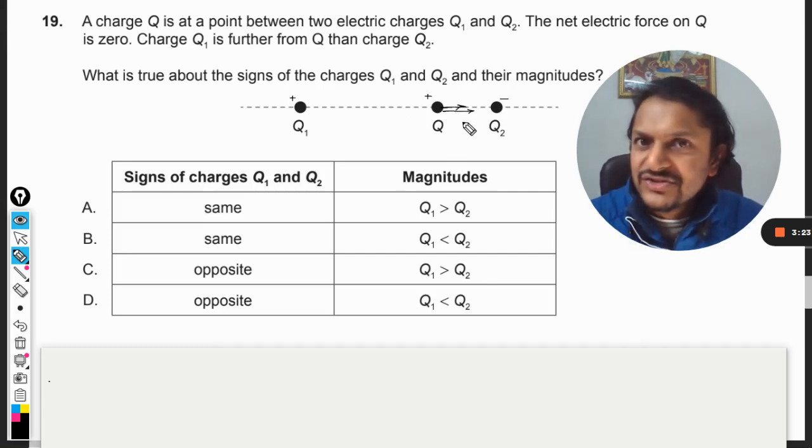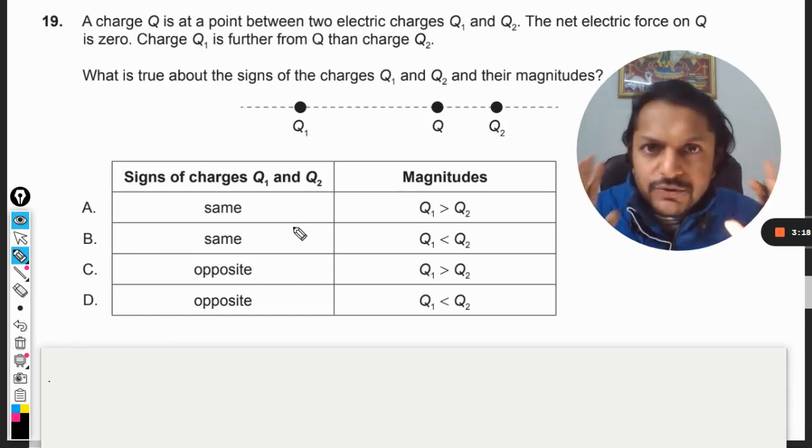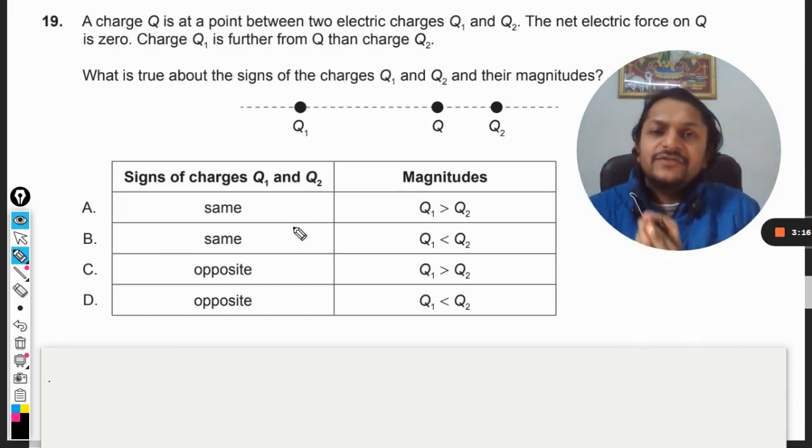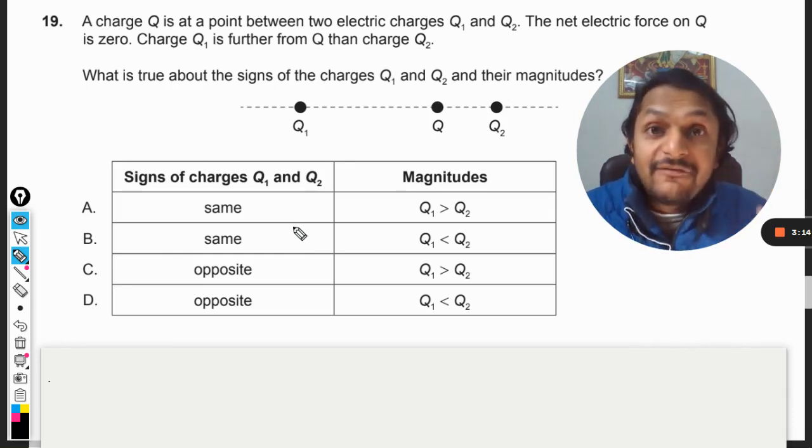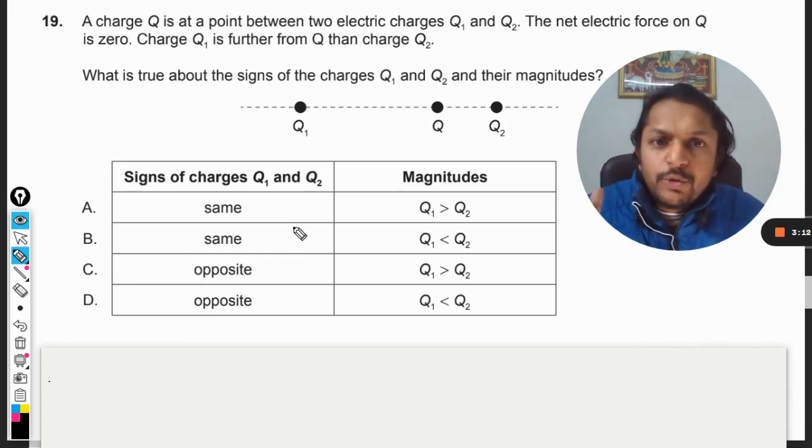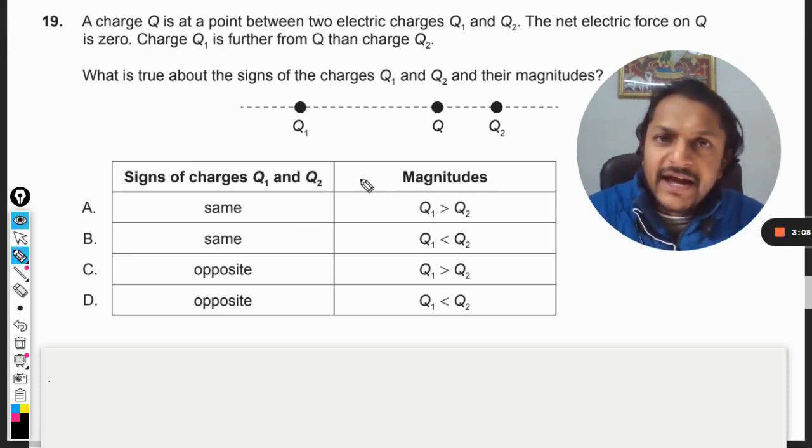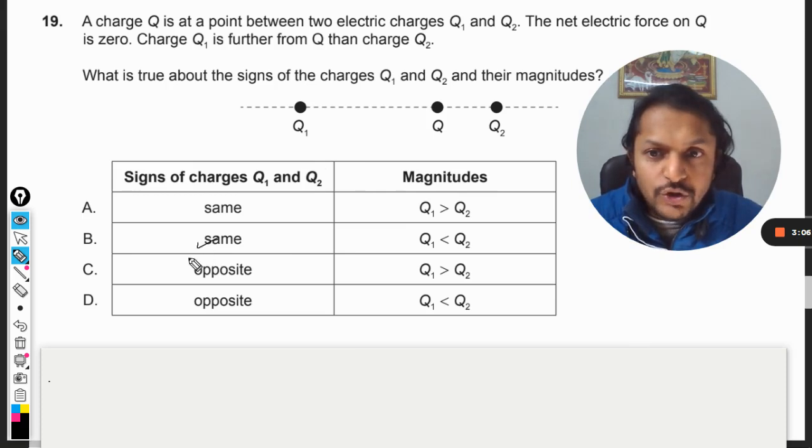So we come to this conclusion that the signs for q1 and q2 have to be same. Whether both of them can be negative or both of them can be positive, only then the forces will be acting in the opposite direction. So either A or B. So C and D are wrong.